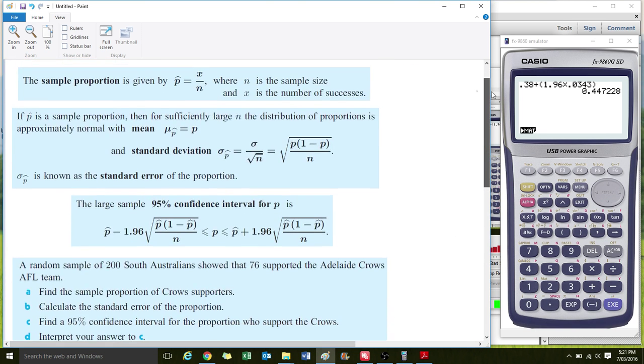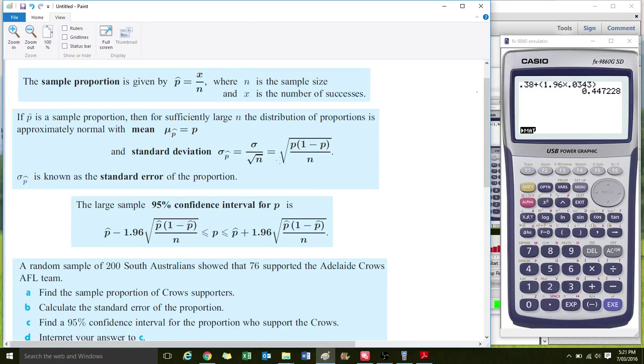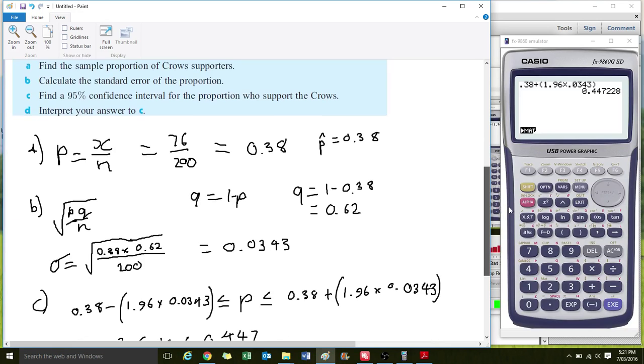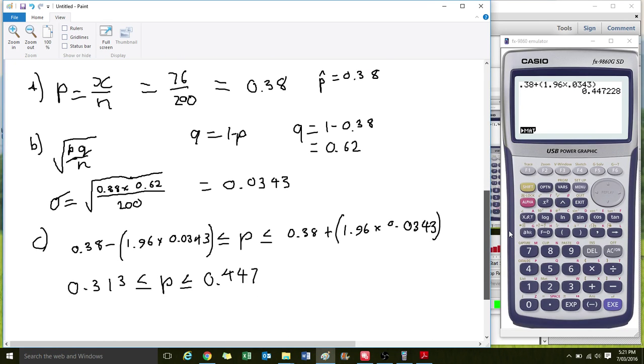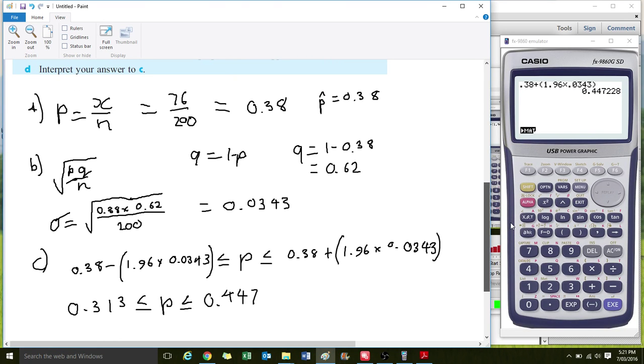So you're going to need to know this information, and you won't always be asked to calculate this separately. Sometimes they'll just throw it in and say calculate the 95% confidence interval. And I'll go through a few more examples with you about how to do that. But it should be pretty straightforward because it's quite similar to what we've done previously.